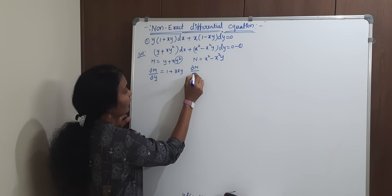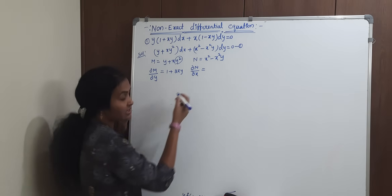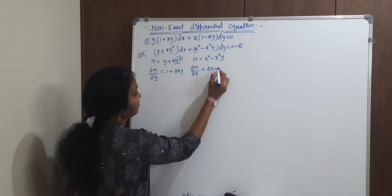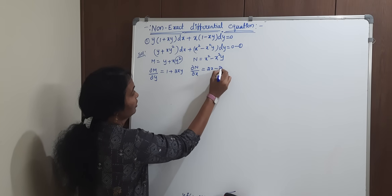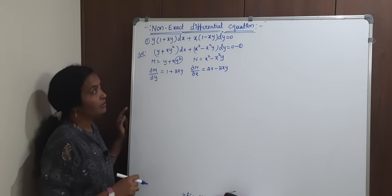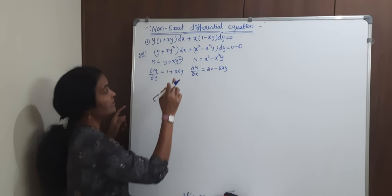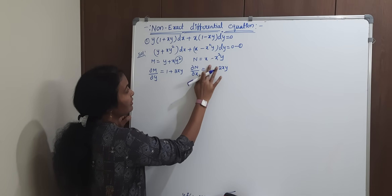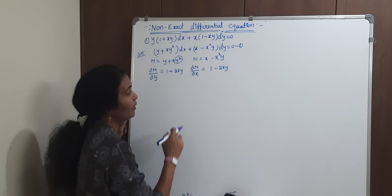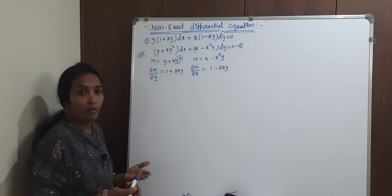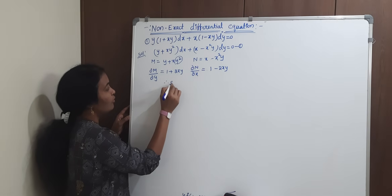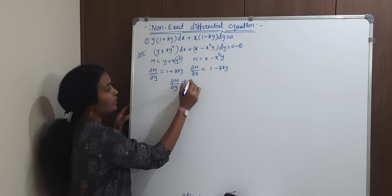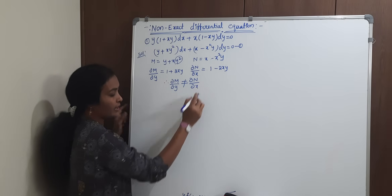Next, differentiate N partially with respect to x: ∂N/∂x equals 2x minus 2xy. Are both equal? No. Since ∂M/∂y equals 1 plus 2xy and ∂N/∂x equals 2x minus 2xy, they are not equal. Therefore ∂M/∂y is not equal to ∂N/∂x.